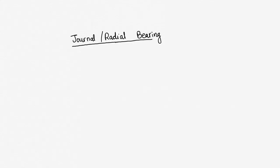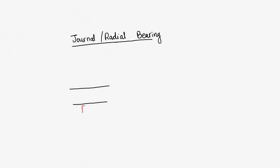Welcome friends. In our previous part we discussed about sleeve bearings, axial load bearing or thrust bearing. Now we are going to discuss about the radial load bearing, which is also known as journal bearing. The journal is basically the portion of the shaft which lies inside the bearing. If I have a shaft and support it with a bearing in the radial direction, the portion of the shaft inside the bearing is the journal. It will have some length L and diameter D.